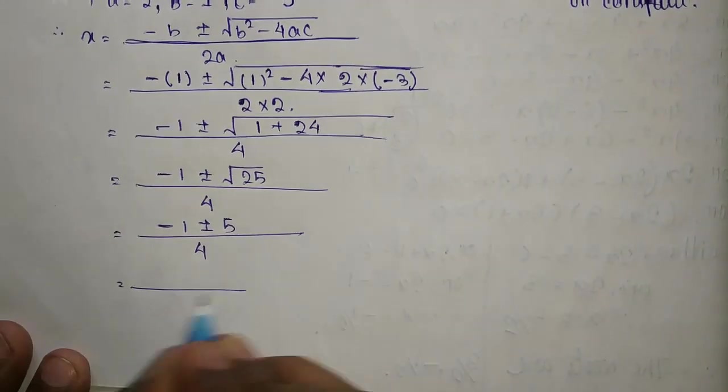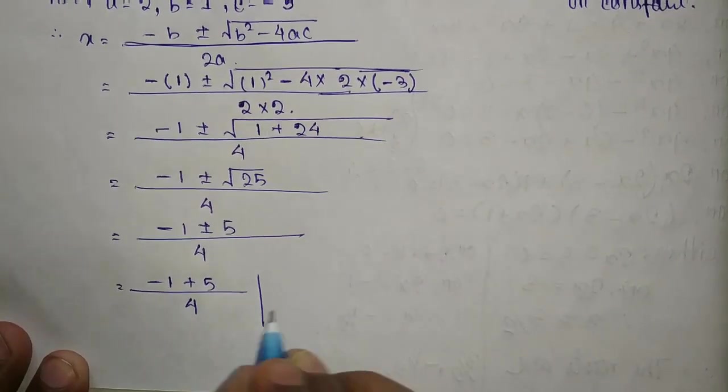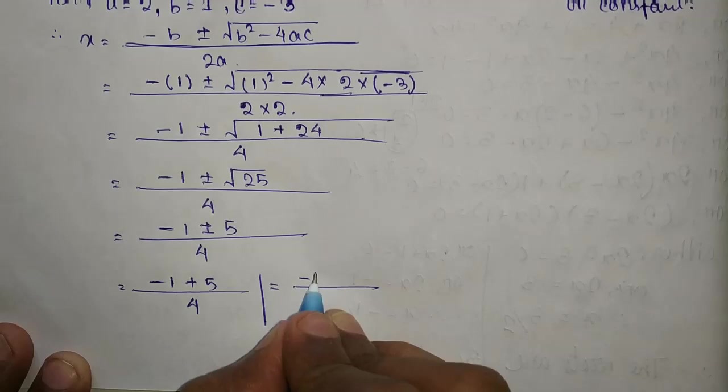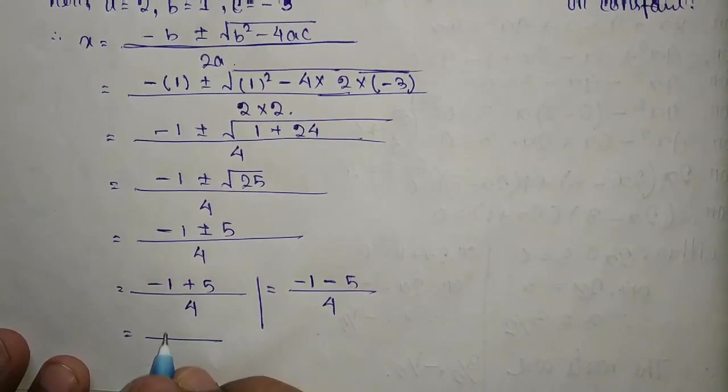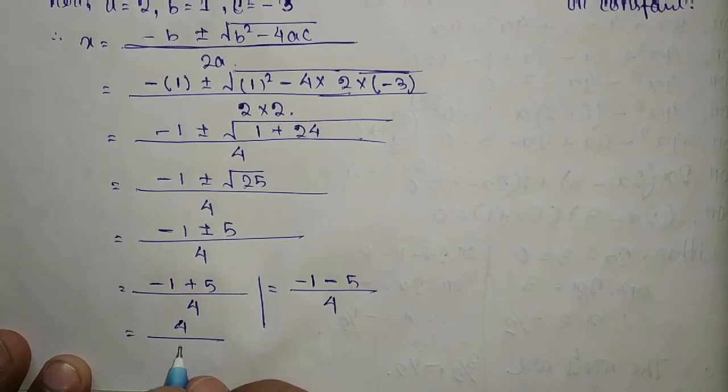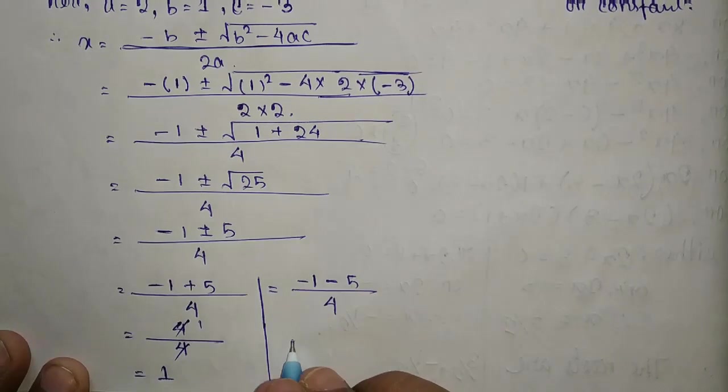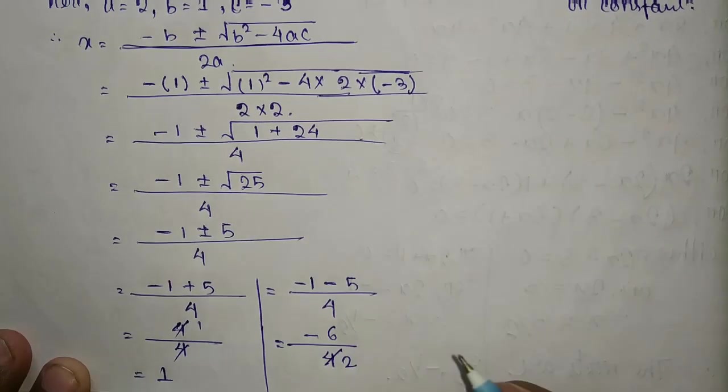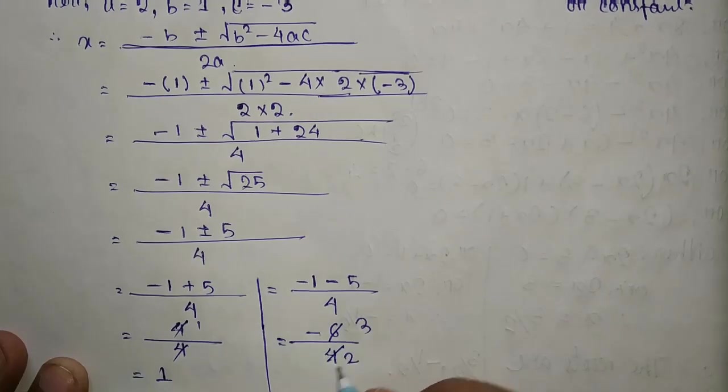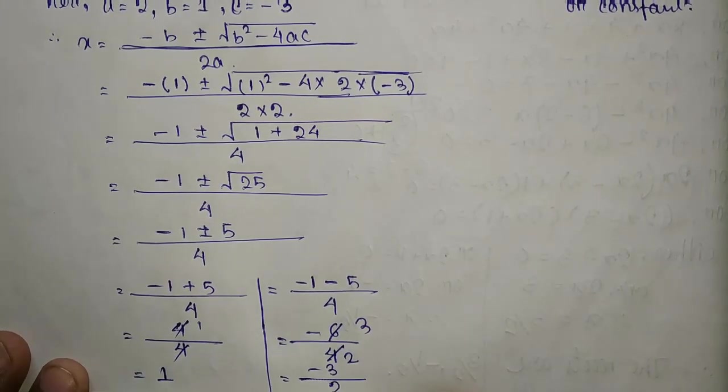This equals minus 1 plus 5 by 4 or minus 1 minus 5 by 4. The first equals 4 by 4 equal to 1. The second equals minus 6 by 4, which simplifies to minus 3 by 2.